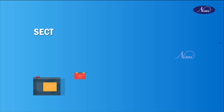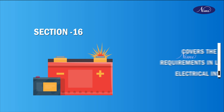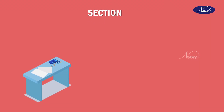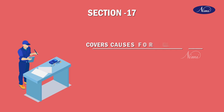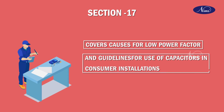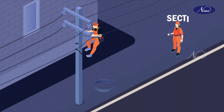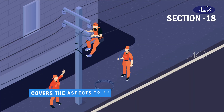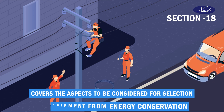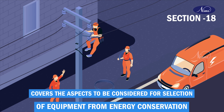Section 16 covers the protection requirements in low voltage electrical installations of buildings. Section 17 covers causes of low power factor and guidelines for use of capacitors to improve the power factor in consumer installations. Section 18 covers aspects to be considered for selection of equipment from an energy conservation point of view and guidance on energy auditing.